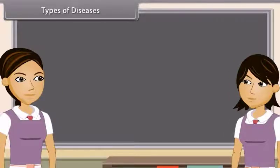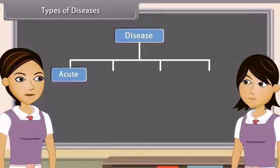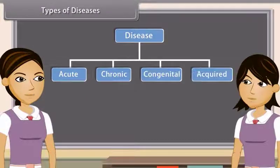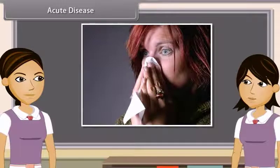Can you tell me how many types of diseases are there? Human diseases are grouped into four categories: acute, chronic, congenital and acquired. Acute diseases are those diseases whose effects come on suddenly and affect the body quickly. Example: influenza.